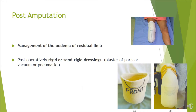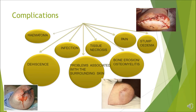To reduce stump edema and promote wound healing, rigid or semi-rigid dressings can be applied. These are removable plaster of Paris or vacuum dressings applied depending on the status and level of the team. There are several post-operative stump complications that need to be closely monitored and addressed: hematoma, wound dehiscence, infection, tissue necrosis, bone erosions or osteomyelitis, and skin-related problems such as pigmentation and blisters.